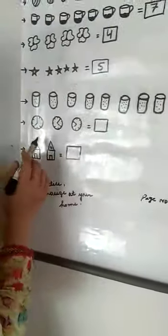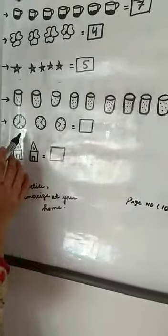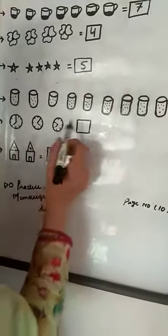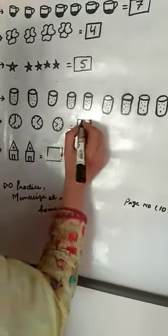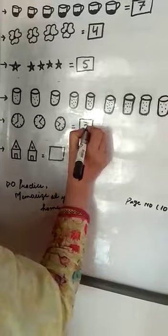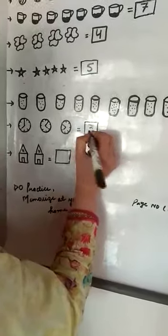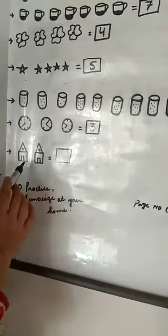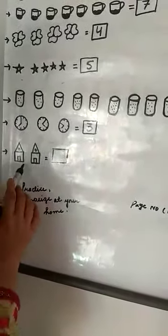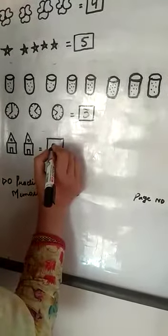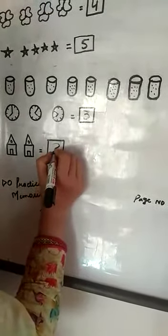यहाँ watches बनाए हैं: one, two, three. Is equal to आएगा three, box में लिखना है three. यहाँ houses बनाए हैं: one, two. Is equal to आएगा two.